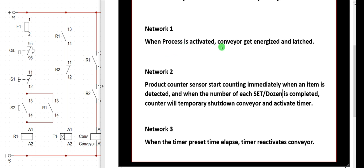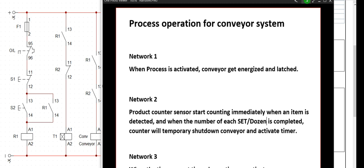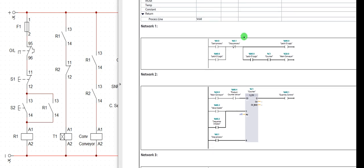The instruction says: when process is activated, conveyor gets energized and latches. So here is our latching circuit. I have my fuse, my overload contact, my stop button, and my start button. I activate my relay R1, which will latch here. The whole of network one from our program logic, if we are converting it to schematic, is going to take care of this logic here.